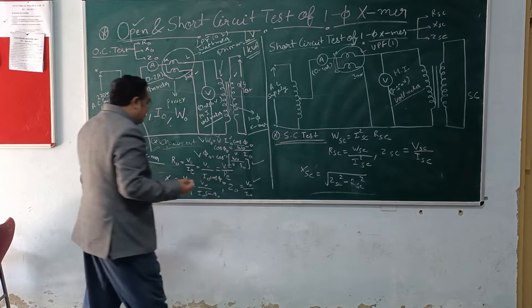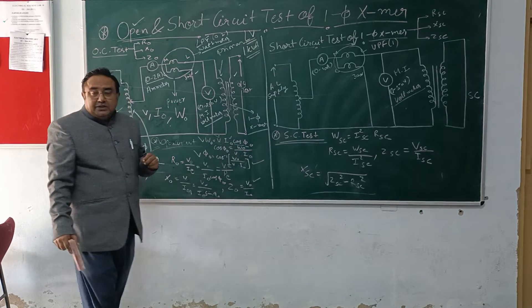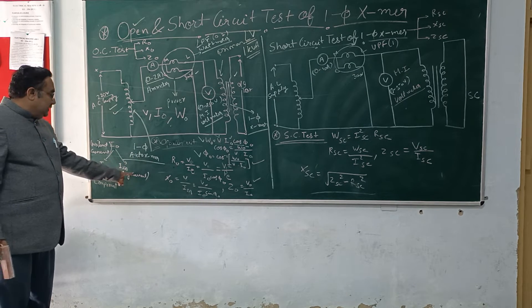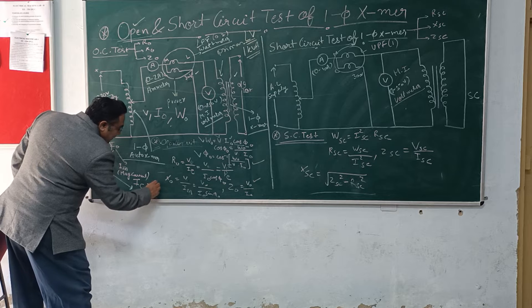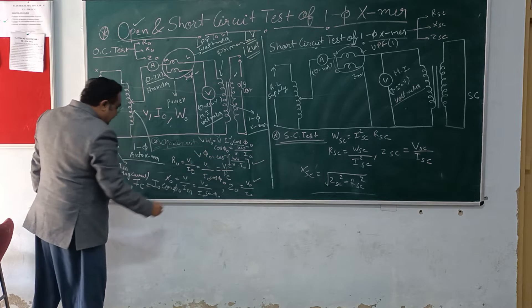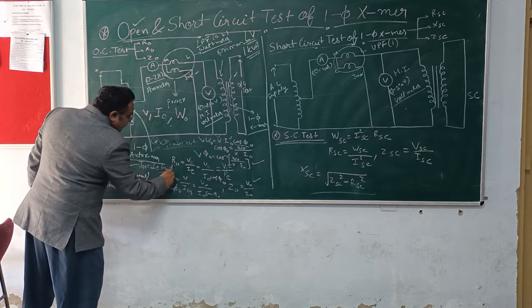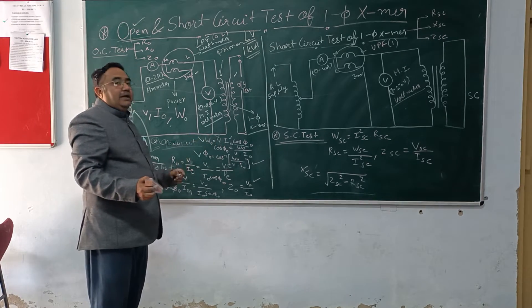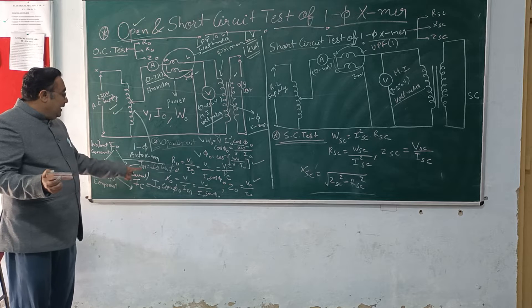Once we have found out the power factor angle, we can find out the different components of the no-load current. As I have told in the theoretical class, the no-load current consists of two components: the core loss component and the magnetizing component. The core loss component IE is nothing but I0 × cos φ0, and the magnetizing current IM is equal to I0 × sin φ0. So by measuring voltage, current, and power, we have found out not only the no-load exciting current but also its two components IE and IM.